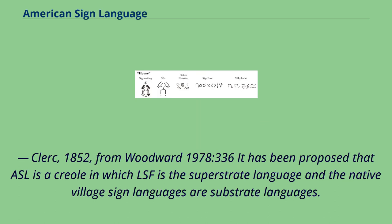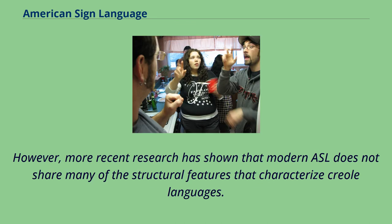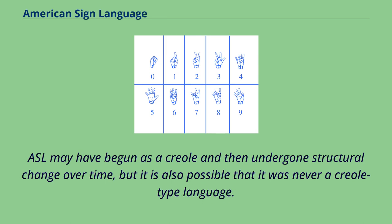Clerc, 1852. It has been proposed that ASL is a creole in which LSF is the superstrate language and the native village sign languages are substrate languages. However, more recent research has shown that modern ASL does not share many of the structural features that characterize creole languages. ASL may have begun as a creole and then undergone structural change over time, but it is also possible that it was never a creole-type language.